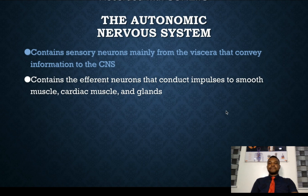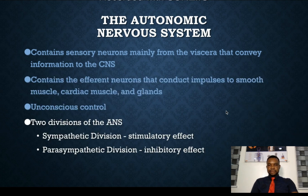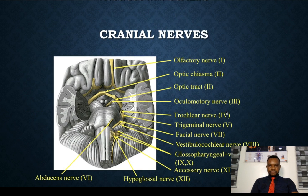The autonomic nervous system means that it functions on its own — it is not under the control of the will. It contains efferent neurons that conduct impulses to smooth and cardiac muscle as well as the glands of the body. It has two divisions: the sympathetic division, which is stimulatory, and the parasympathetic division, which is inhibitory.